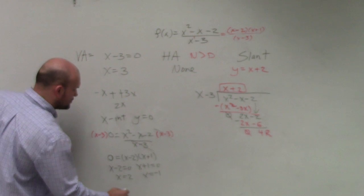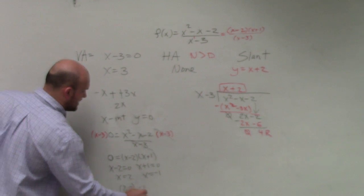I prefer that you guys write these as coordinate points: 2 comma 0 and negative 1 comma 0.